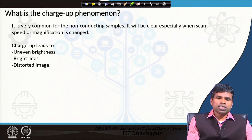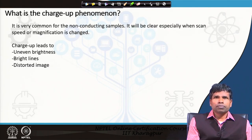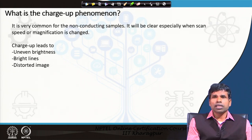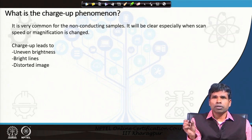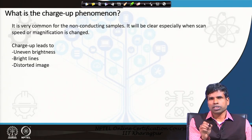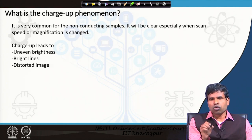Let us first discuss what is the charge-up phenomenon. It is very common for non-conducting samples. It will be clear especially when scan speed and magnification are changed. Scan speed means how fast the electron beam is scanned across the surface — we can decide how long the electron beam stays in one place before moving to another and collecting the signal. We can choose a slower scan rate, which improves the signal-to-noise ratio.